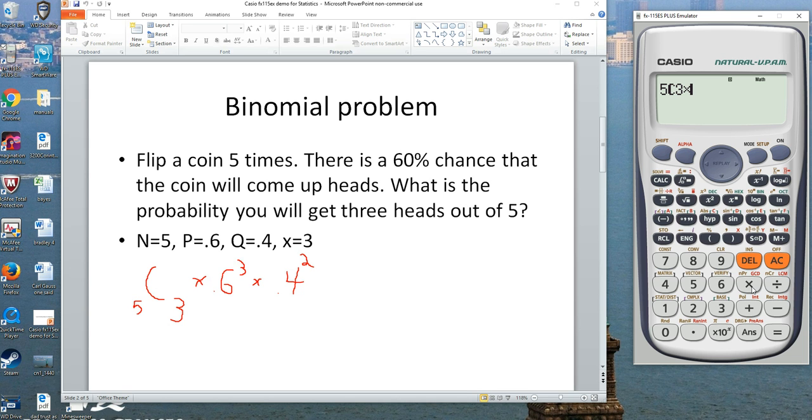Multiply by 0.6 to the third power. Hit your right arrow key to come down. Hit multiply again and hit 0.4 to the second power.